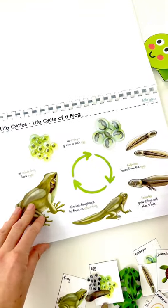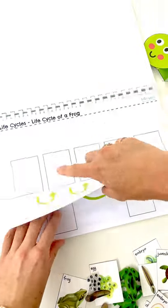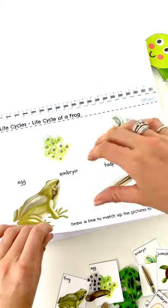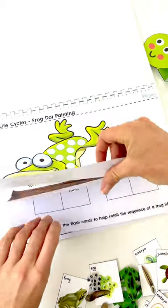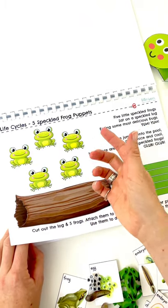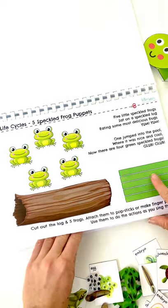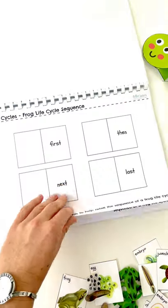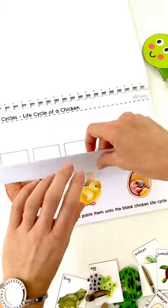I'm just going to quickly flick through. We've got the frog life cycle, the labels, the puzzles, the different ways of sequencing and the cycle again. Cut and paste activity. We've got dot painting for the frogs and the five speckled frogs — you can laminate these, cut them out, stick them onto pop sticks and have little puppets as you sing the rhyme, or finger puppets. You can use these to make a ring and stick the frog to, and you've got your little log there. Then sequencing for chickens.